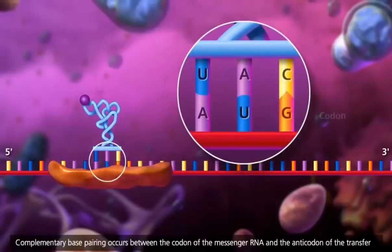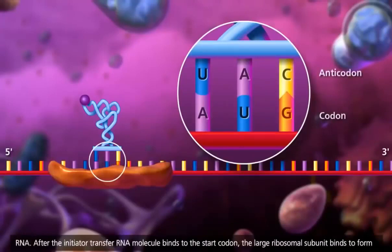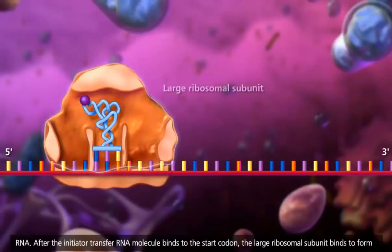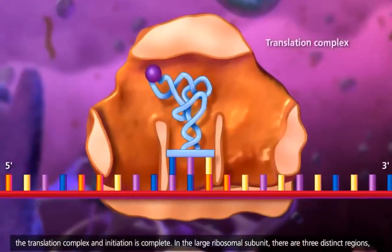Complementary base pairing occurs between the codon of the messenger RNA and the anticodon of the transfer RNA. After the initiator transfer RNA molecule binds to the start codon, the large ribosomal subunit binds to form the translation complex and initiation is complete.